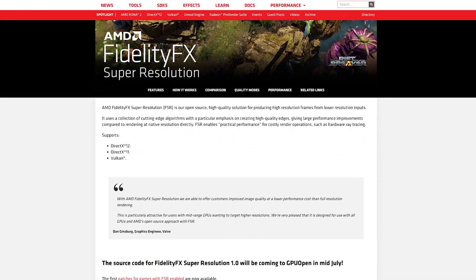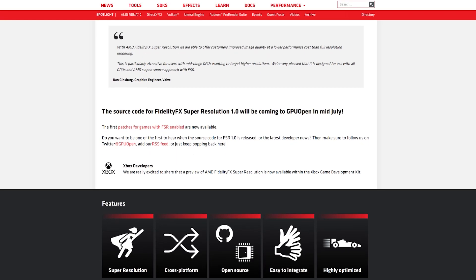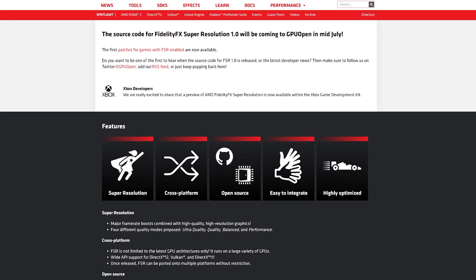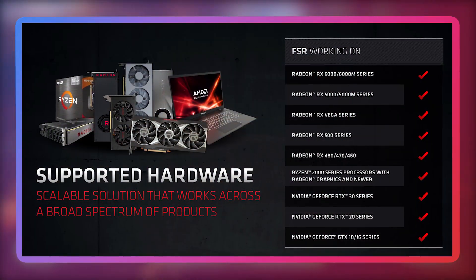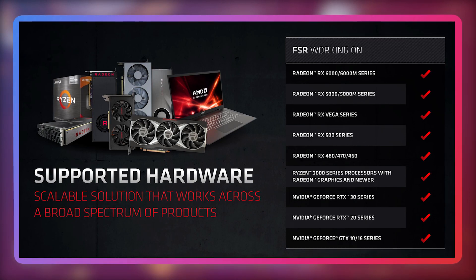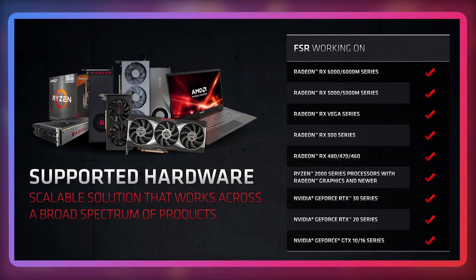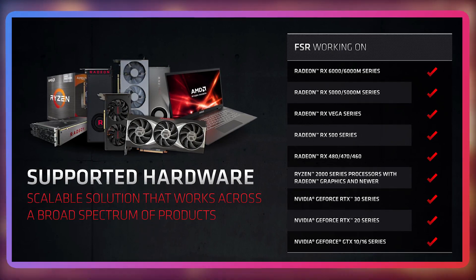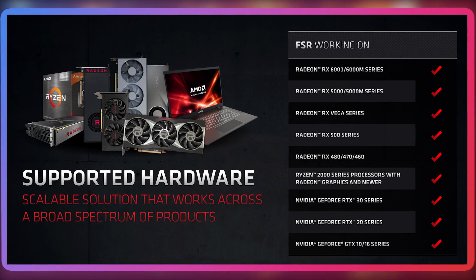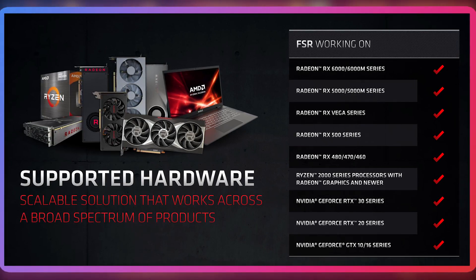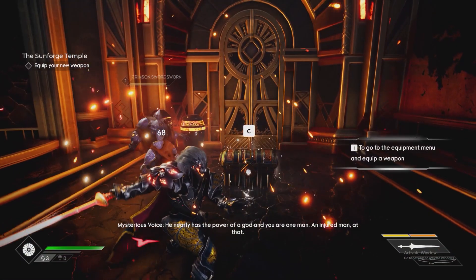AMD's FSR, or FidelityFX Super Resolution, is a new technology AMD released a couple of weeks ago to compete with Nvidia's proprietary DLSS technology. AMD haven't been quite so stingy with the tech, as FSR will be available on any Nvidia GPUs from Pascal onwards — that's anything from the GT 1030 all the way up to the RTX 3090. There's also a laundry list of supported GPUs and APUs from AMD, from the Ryzen 2000 series APUs on the CPU side, and anything from the RX 460 up to the 6000 and 6000M series of GPUs.